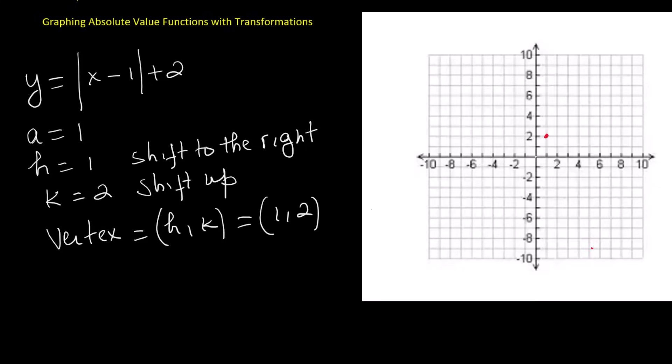From the vertex, we use the slope to find more points. Since a equals 1, the slope is 1. Starting at the vertex, move up one unit and to the right one unit to plot a point. Then, from the vertex, move up one unit and to the left one unit to plot a matching point. Connecting these points gives us a V-shaped graph opening upward, centered at the vertex 1 comma 2.